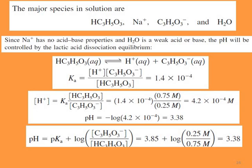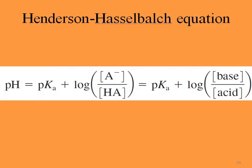An alternative method is the Henderson-Hasselbalch equation: pH = pKa + log([A⁻] / [HA]), where [A⁻] is the conjugate base concentration and [HA] is the acid concentration. This gives the same result directly.